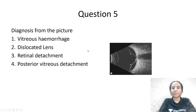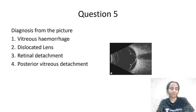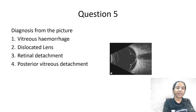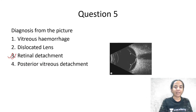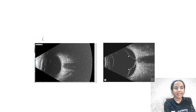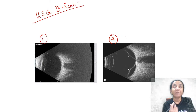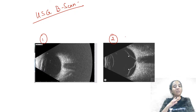What is the diagnosis from this picture? Is it vitreous hemorrhage, dislocated lens, retinal detachment, or posterior vitreous detachment? This picture is of a B-scan USG. B-scan is used for evaluation of the posterior segment of the eye in conditions where the media is very hazy — like a dense cataract, corneal opacity, or vitreous hemorrhage where you cannot see the posterior segment even with an indirect ophthalmoscope.